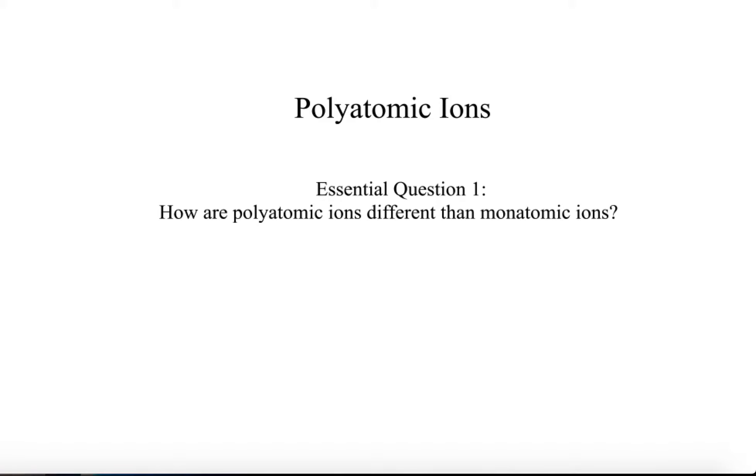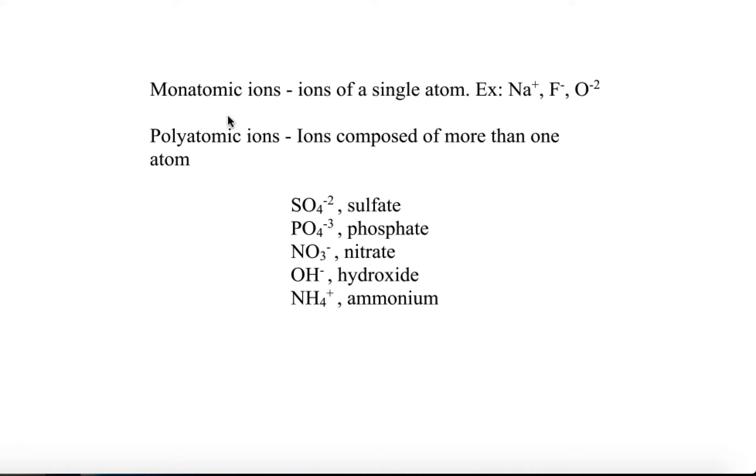Well, for starters, the monatomic ion is just the ion of a single atom, meaning that it's an ion of just one atom, so like sodium, fluoride, oxide, whatever.